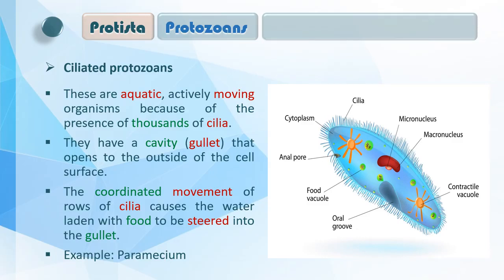The coordinated movements of rows of cilia cause the water laden with food to be stirred into the gullet। Cilia की organized movement की वजह से water movement होती है, और पानी के medium के through खाना gullet की तरफ खिंचा चला आता है। इस तरह Paramecium अपना food capture कर लेता है। Example: Paramecium — यह ciliated protozoas का हिस्सा है।